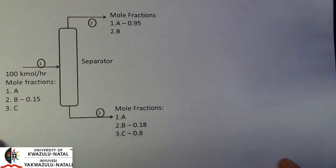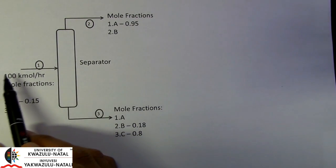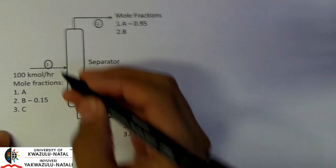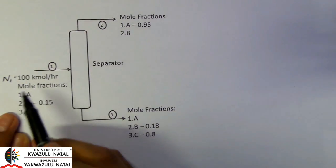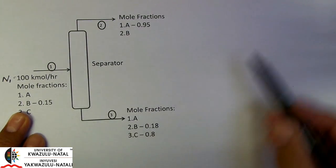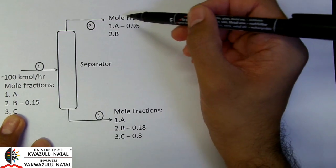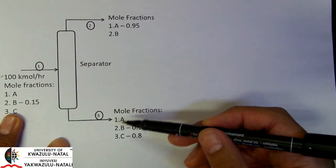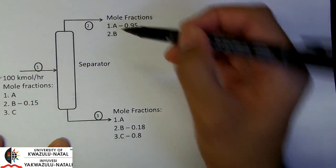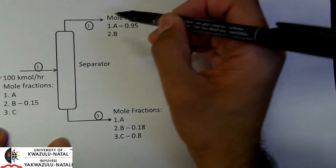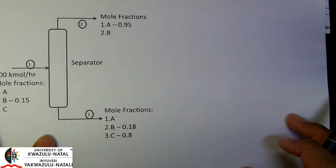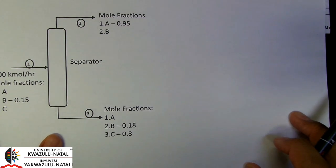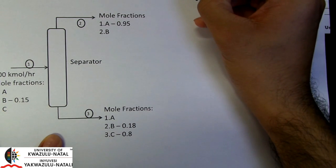So let's get straight to it. In this example we have a separator with an input of 100 kmol per hour — that's our total stream flow, N1 — and we are given the mole fraction of just component B. In terms of our outputs, we are given the mole fraction of component A in stream 2, and we are also given the mole fractions of component B and C in stream 3. As you may notice, we do not have any molar flows for stream 2 and stream 3. The way to approach this problem is to firstly draw up a degree of freedom analysis table.